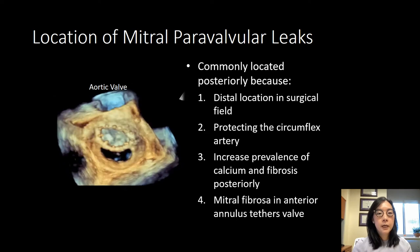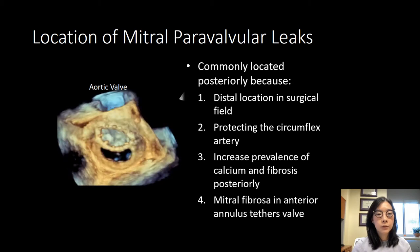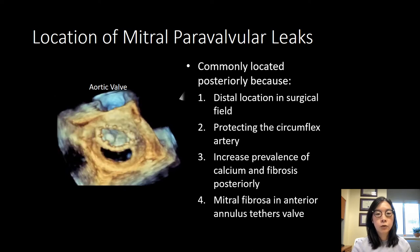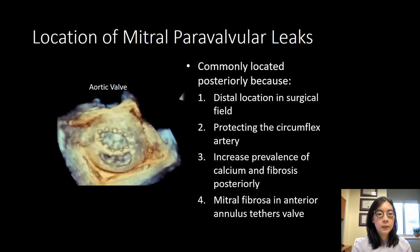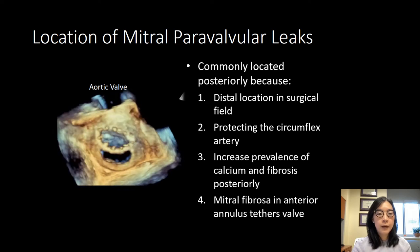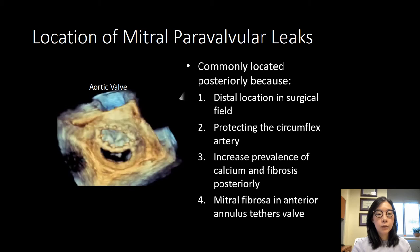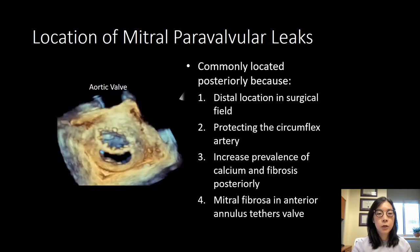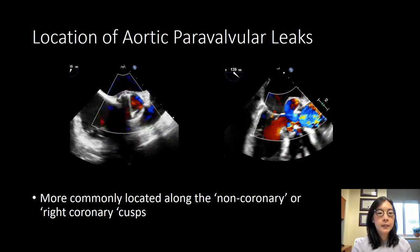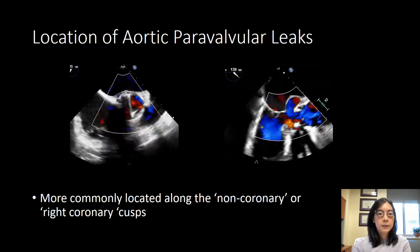We know from many studies that the location of paravalvular leaks tends to be posteriorly, for several reasons: it's a distal location in the surgical field; the course of the circumflex in that area means surgeons tend to take a shallower bite to protect the circumflex artery; there's an increased prevalence of calcium fibrosis in this area making it difficult to sew the valve annulus; and the anterior portion of the annulus has the mitral fibrosa which is very rigid and can tether the valve, putting increased pressure on the posterior part. Aortic paravalvular leaks tend to be more commonly located along the non-coronary or right coronary cusps.